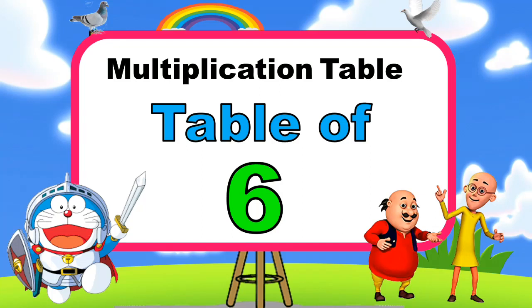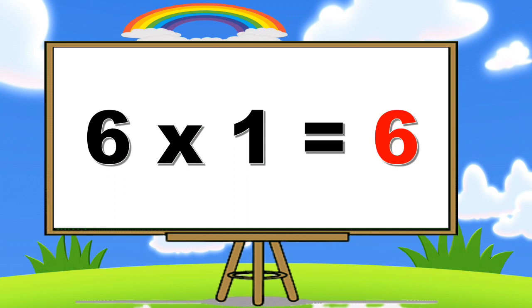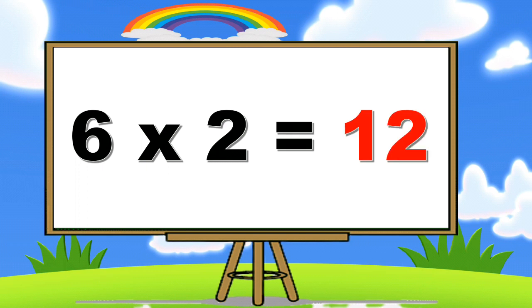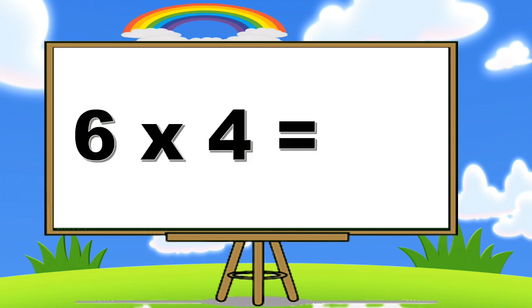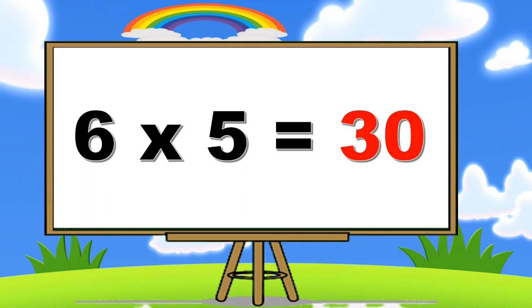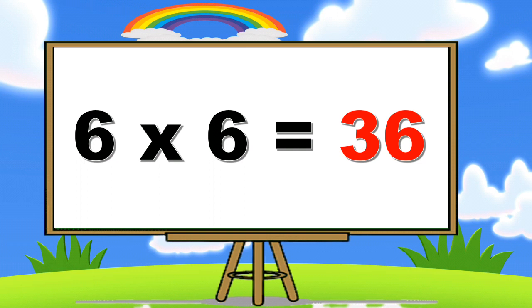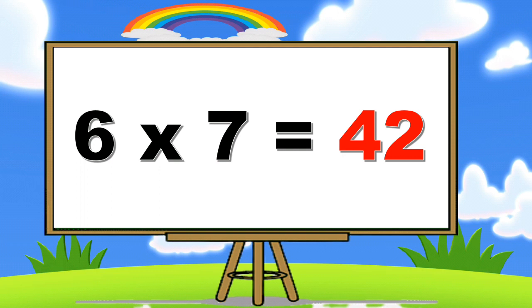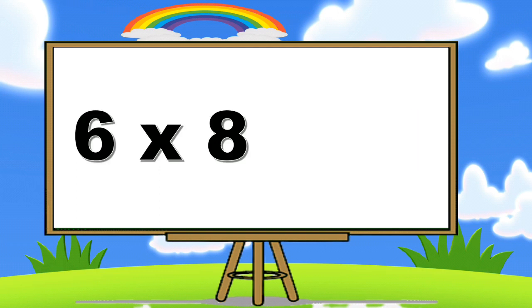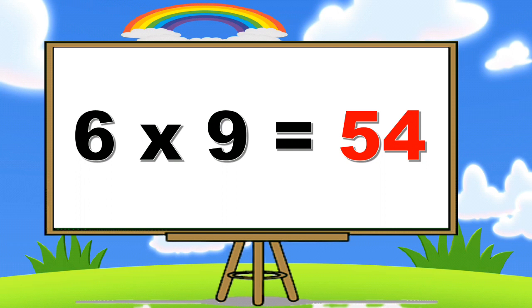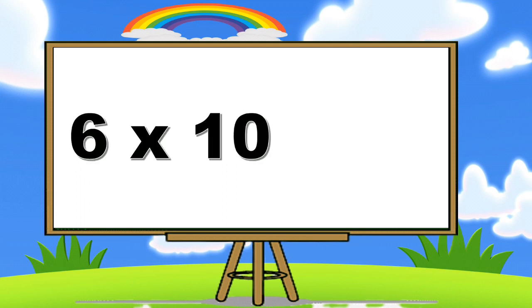Table of Six. Six sevens are forty-two. Six eights are forty-eight. Six nines are fifty-four. Six tens are sixty.